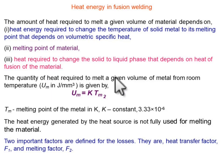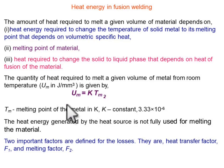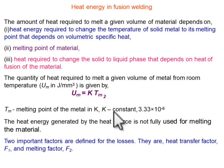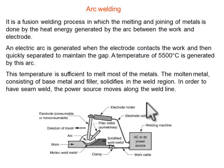Combining all these aspects, we arrive at a single formula: the melting heat energy equals K times Tm², where K is a constant calculated experimentally and Tm is the melting point of the metal. This is how we can calculate the heat energy interaction in fusion welding.